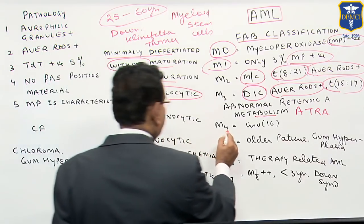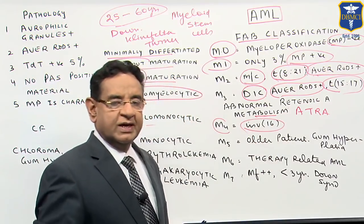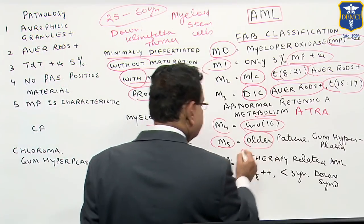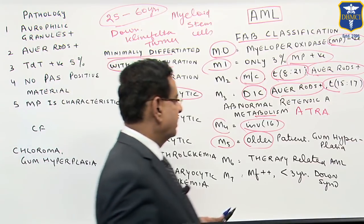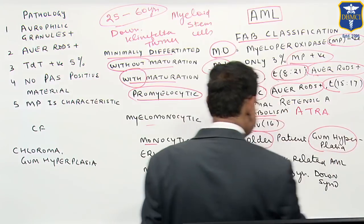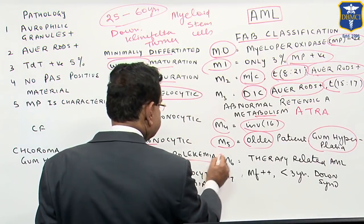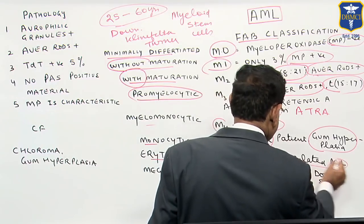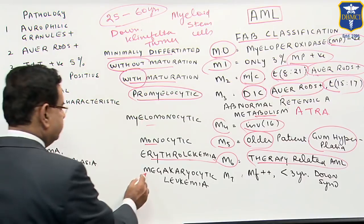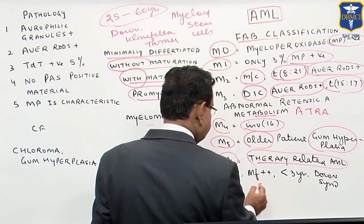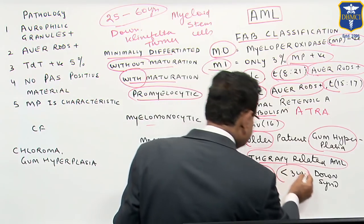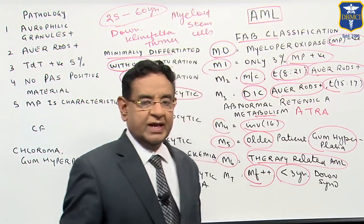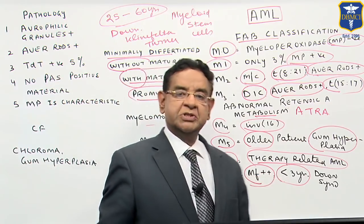M4 is myelomonocytic leukemia, and it is more associated with inv(16). M5 is monocytic leukemia, which typically involves older people, and the patient has gum hyperplasia. M6 is erythroleukemia, which is classically most common in therapy-related acute myeloid leukemia. M7 is megakaryocytic leukemia, where myelofibrosis is very common, and it is more commonly seen in children below 3 years with Down syndrome. Remember, the common age of AML is 25 to 60 years, but M7 can occur in children also.